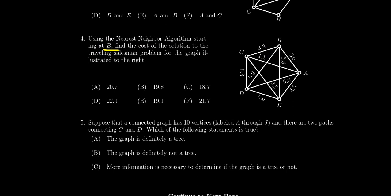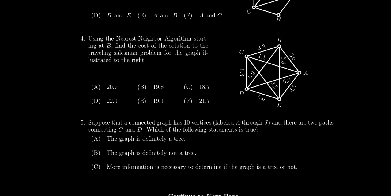The question doesn't ask what the Hamilton circuit is — it just wants the cost of the circuit, so add together all the edges you use. You are allowed to use a calculator on this exam, which is helpful for the arithmetic here. Many of the wrong answer choices correspond to costs of different Hamilton circuits you'd find using the wrong starting vertex or the cheapest link algorithm, so be sure to follow the instructions and start at the specified vertex.